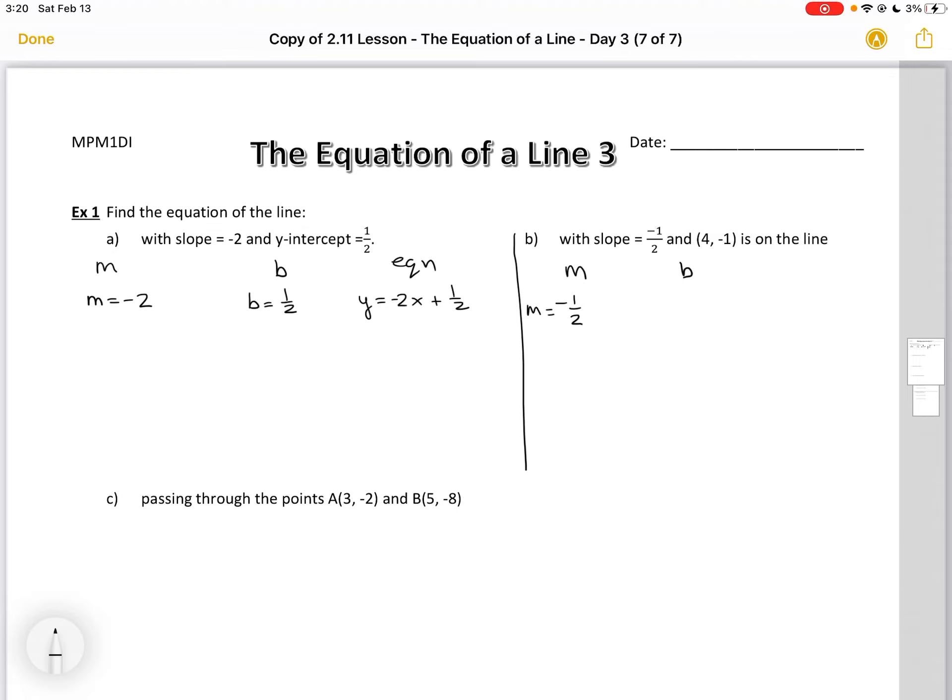Then I'm looking for my y-intercept, which is not given, so I need to solve for it by substituting in the point that's given to me in the question, x and y. I'm going to substitute in minus 1 for y and 4 for x. And then I'm going to subtract 2 from both sides to solve for b. That leaves me with b equals minus 3. And it's going to allow me to write my equation as y equals minus 1 half x minus 3.